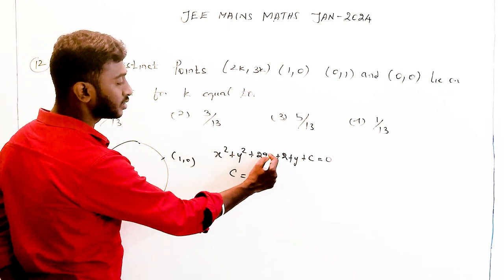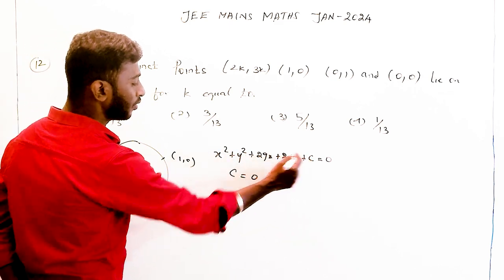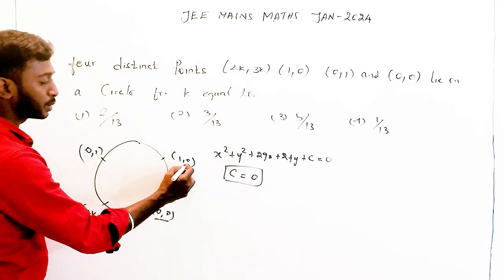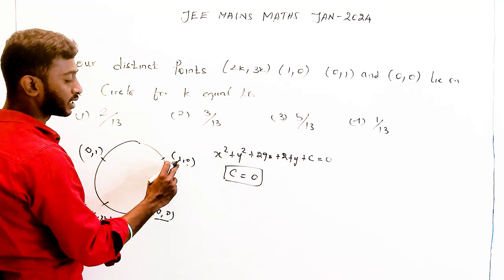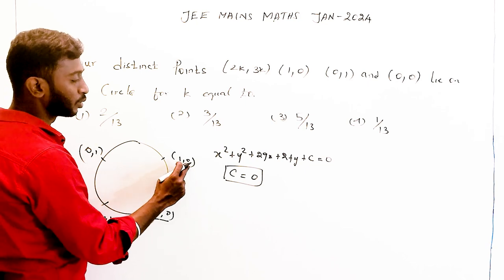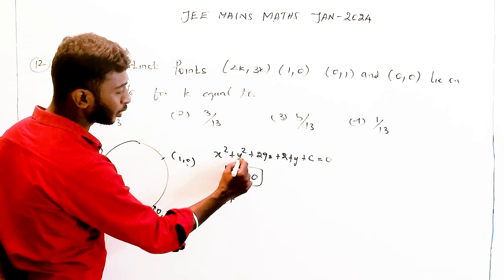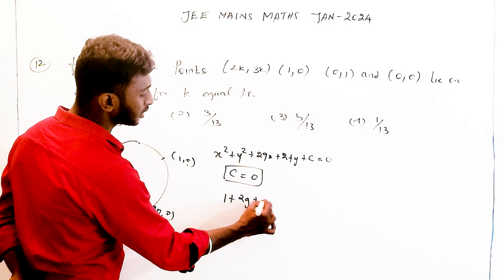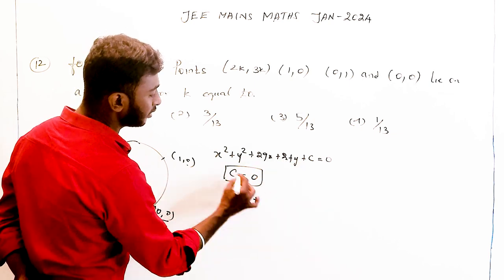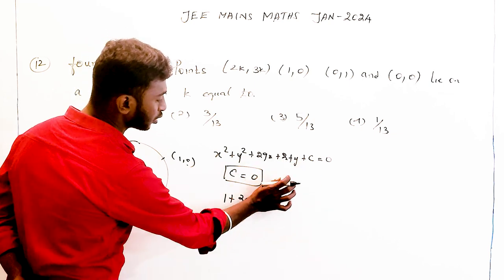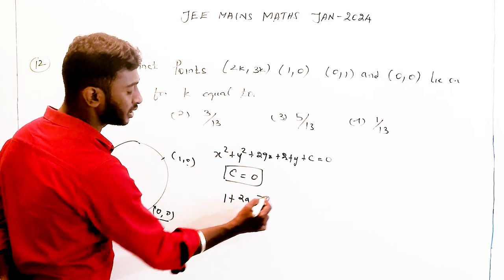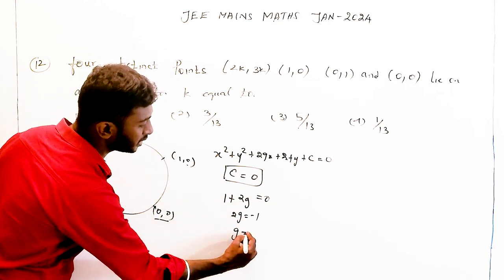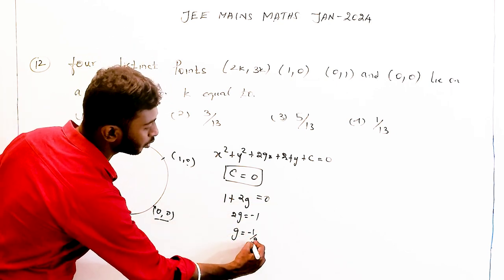Substituting (0, 0) into the circle equation — x is 0, y is 0 — we get c = 0. Next, substituting (1, 0): x is 1, y is 0, giving 1 + 2g + 0 + c = 0. Since c = 0, we get 1 + 2g = 0, so 2g = −1 and g = −1/2.